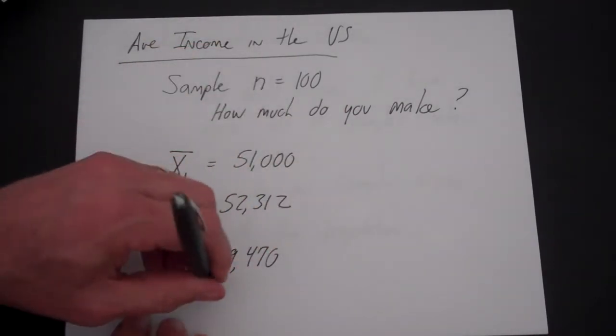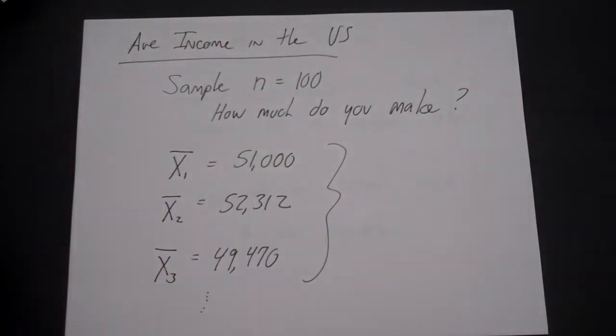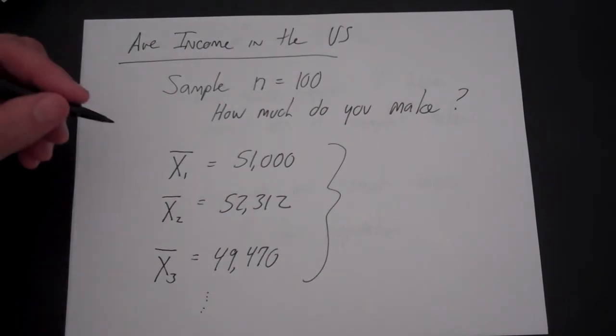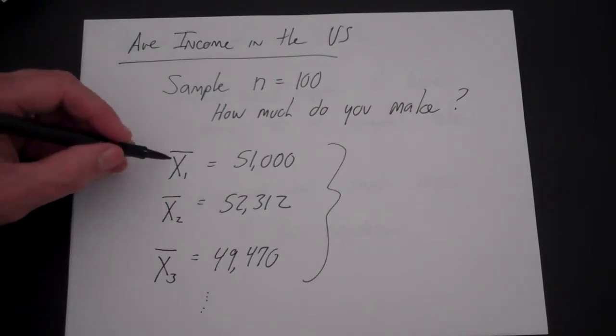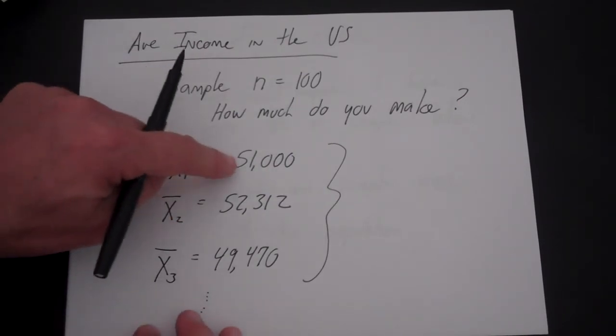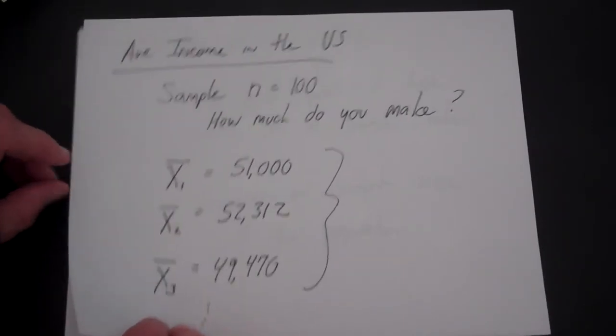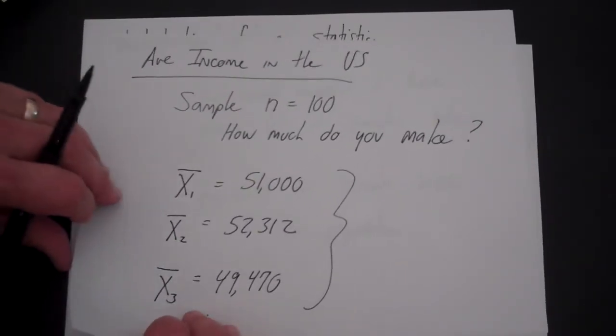You can imagine you could keep doing that, and if you kept doing that over and over, what you would get is an average of all the samples and also a spread because all these differ. So you can talk about the distribution of the statistic.